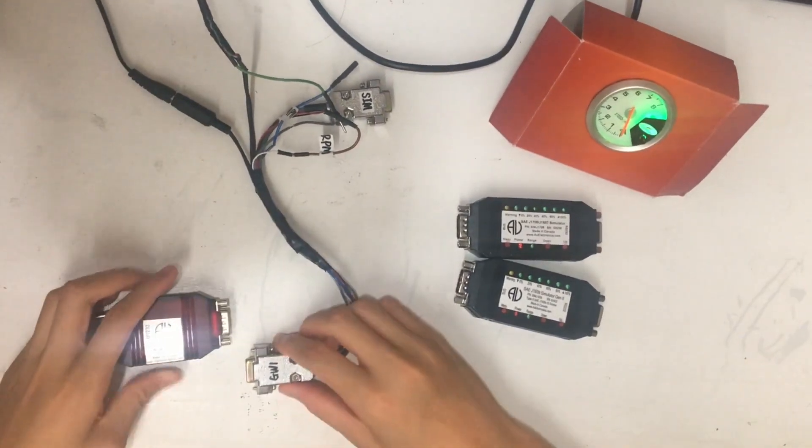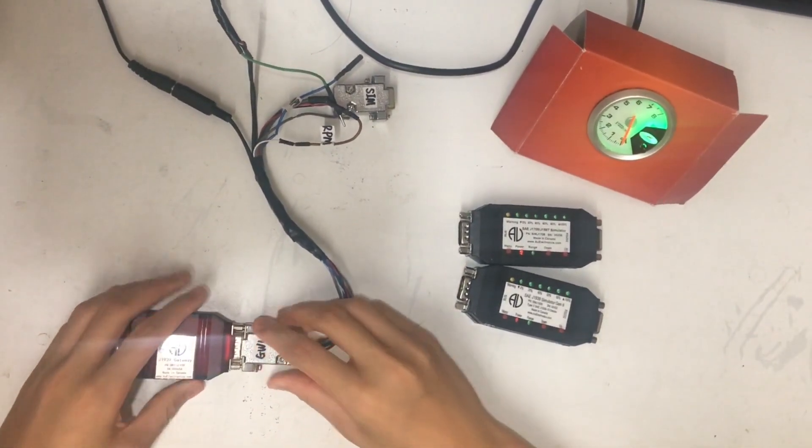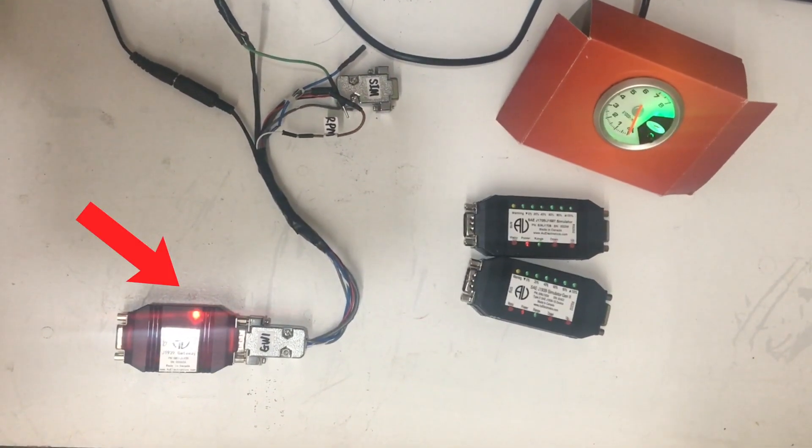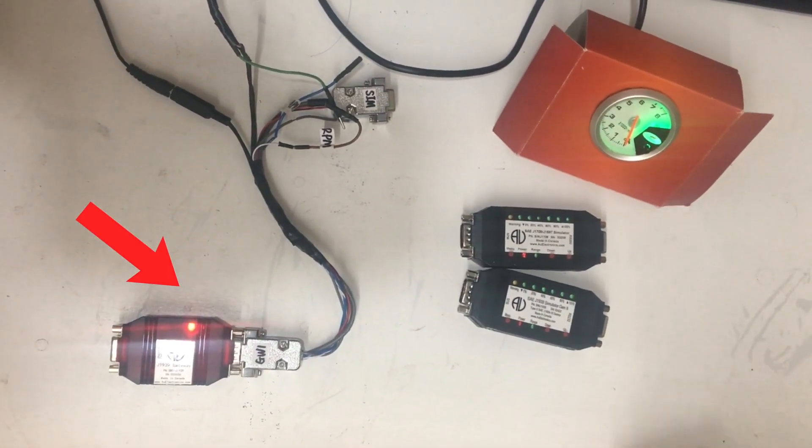Next, we attach the Gateway 1 to the customized cable. The blinking LED indicates that the Gateway 1 is up and running.